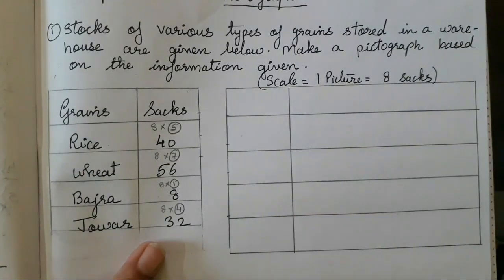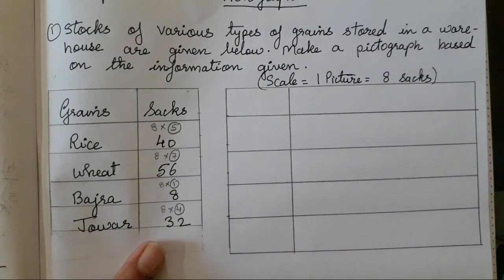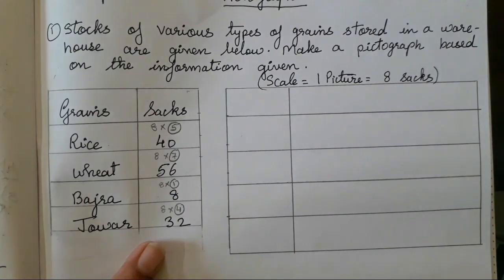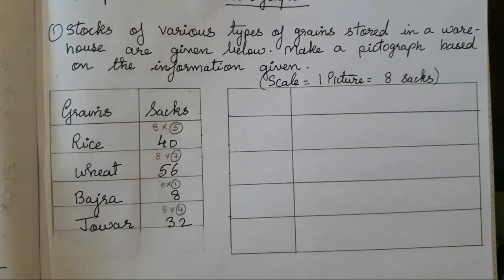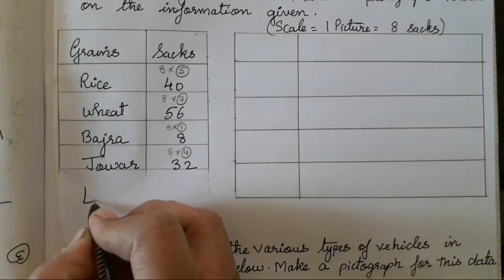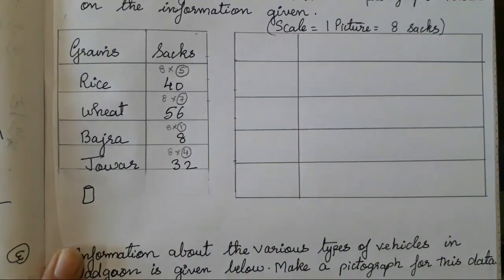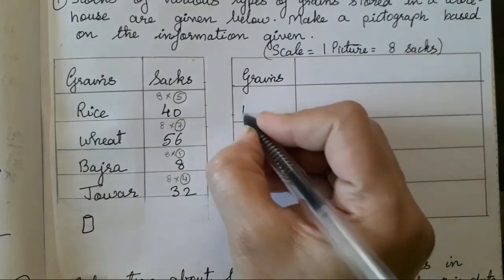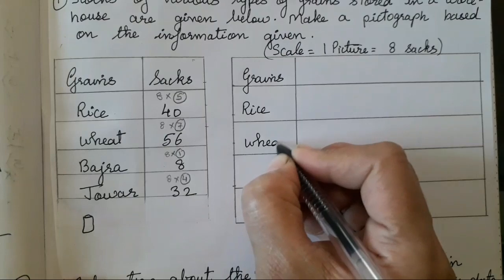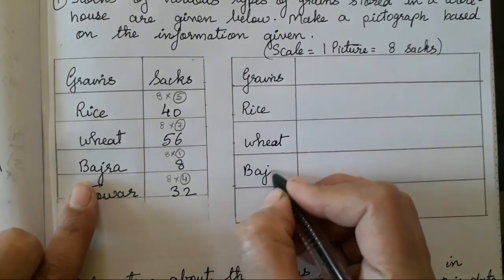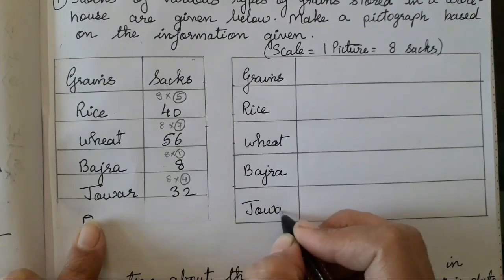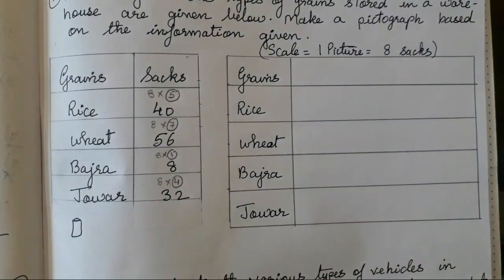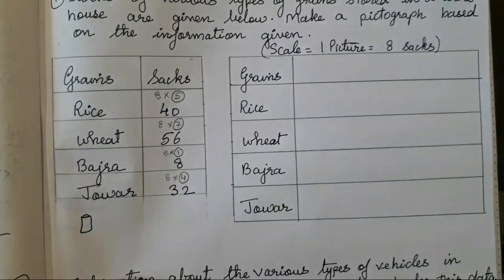Writing the scale is very important, because if you are not going to write this, you will not be able to draw the pictures. So now we have decided how much we have to draw for 1 picture. But what picture are you going to draw, children? You all can draw any picture. I am going to draw a sack like this. You all can draw any picture of your choice. So over here we will write grains — that is rice, wheat, in the same order. Don't change the order. Bajra, jowar. Now when we have done this rough calculation, do it in pencil for your understanding.